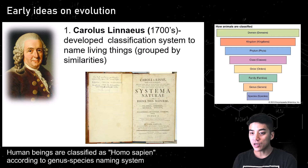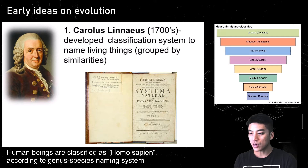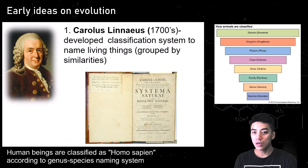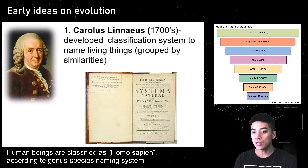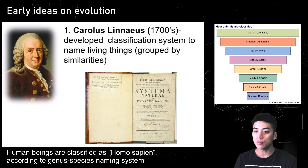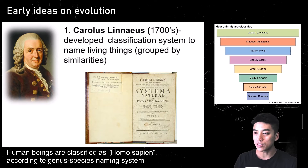One of the first segments in this video is about the early ideas on evolution. We'll look at a few scientists and the ideas that they had and how they influenced our understanding of evolution. So one of the first guys was Carolus Linnaeus in the 1700s, and he developed this classification system to name living things — they're all grouped by similarities.